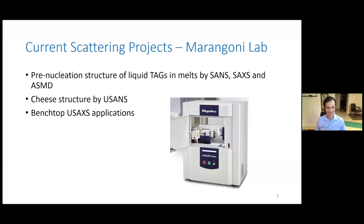We were also crazy enough to grab a whole bunch of cheese. We were doing some milk coagulation work you may have seen published recently. And we also put cheese in a USANS at NIST to see what we get — whether we can tell a good Gouda from an old cheddar from the neutron scattering profiles. I don't know if I have an answer for that yet.